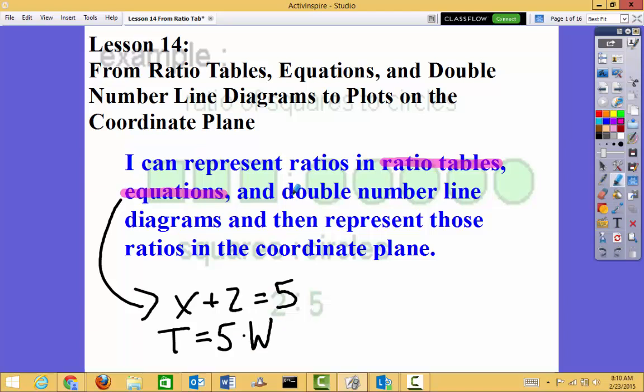And double number lines. So that's a number line where we have two of them that represent those ratios on the coordinate plane. Remember a coordinate plane is when we're graphing and it has an x-coordinate and a y-coordinate. So we're taking our ratios from these three different types and putting them on the coordinate plane.